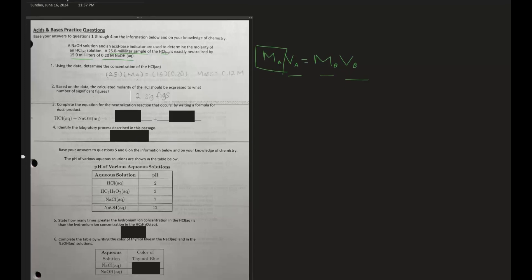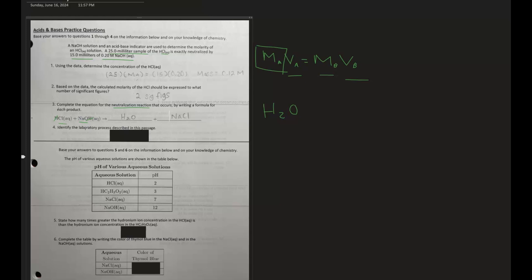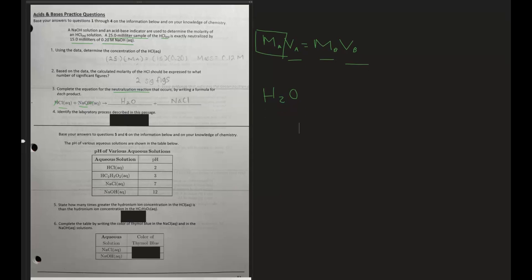Number three: complete the equation for the neutralization reaction by writing a formula for each product. A neutralization reaction is where an acid and a base come together to create water and a salt. Water is H2O. The easy way to solve these is to take out H2O — the H from HCl, and the other H and the oxygen from NaOH. That gives us H2O as our first product. The remaining ions are Na and Cl, so we combine those — already balanced — giving us NaCl as our salt.